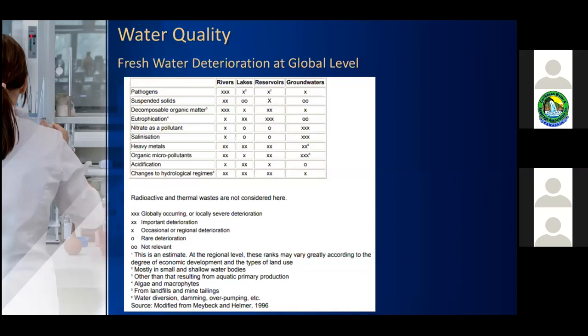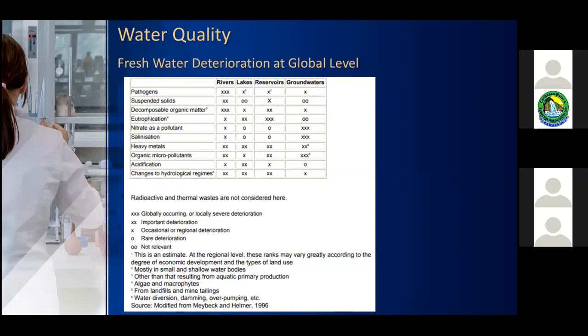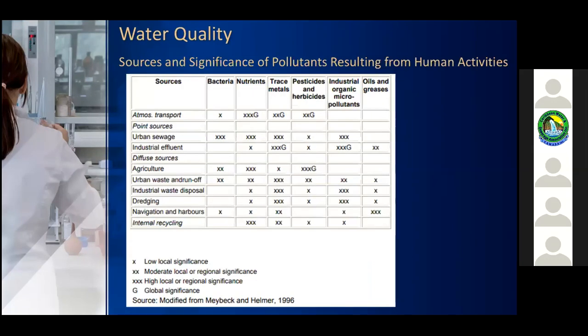The following table shows freshwater deterioration at a global level, comparing the impacts of pathogens, suspended solids, decomposable organic material, eutrophication, nitrate as a pollutant, salinity, heavy metals, and acidification of rivers, lakes, reservoirs, and groundwater. A second table shows the sources and significance of pollutants resulting from human activities, including atmospheric transport, urban sewage, industrial effluence, agriculture, urban waste and runoff, industrial waste disposal, and water from navigation and harbors.